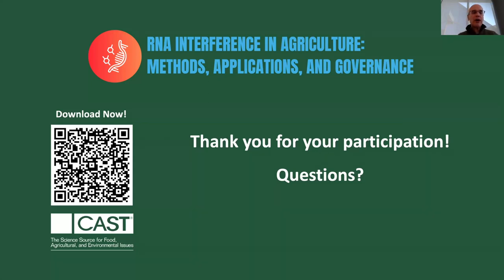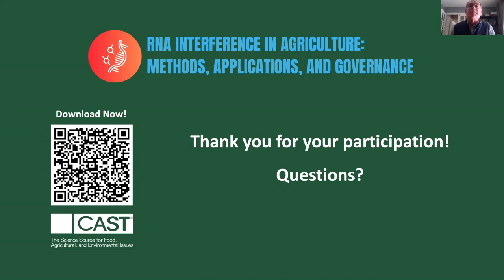Is there any research happening in exploring the use of RNAi technology for weed control? There are several considerations. Whether you're going after a target for weeds, the interest is really more around resistant weeds. If you're going to target resistant weeds using RNAi, what you're talking about is down-regulating the resistance mechanism. If resistance is due to upregulation of a gene, then you can down-regulate it with RNAi or double-stranded RNA. The problem is that many of these plants have multiple mechanisms of resistance, so just down-regulating one mechanism may not confer susceptibility.